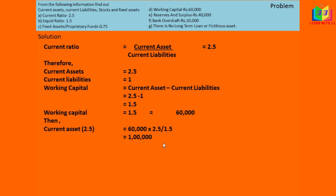Similarly, we have to find out current liabilities. The proportion of current liability is 1, so 60,000 into 1 divided by 1.5 gives 40,000. This is the current liabilities.